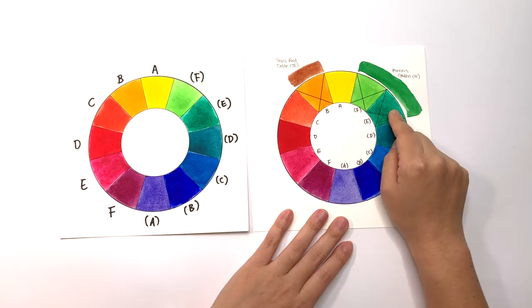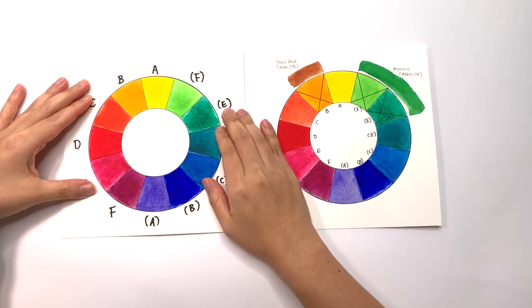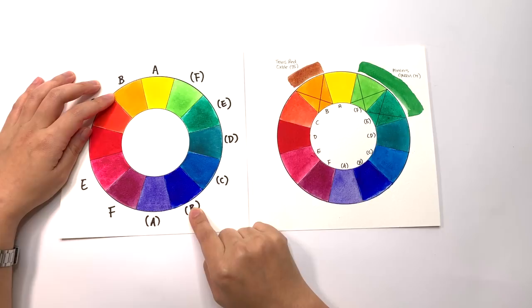So if you do notice that you're not using some of these colors, it's totally possible to find an alternative that you're going to want to use more. All you have to do is look at the color that you don't want, find the opposite color, the complementary color, and try to find a color that neutralizes this. And that's all you have to do. You can adapt this palette to whatever you want.